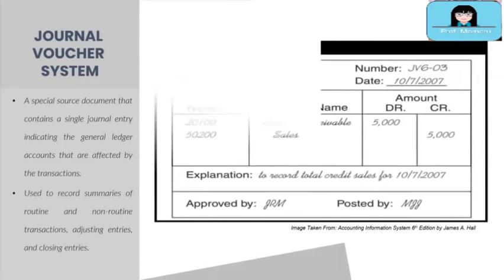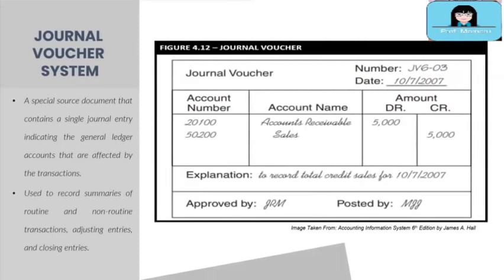On your screen is an example of a journal voucher showing an entry to record a sale on credit or on account.